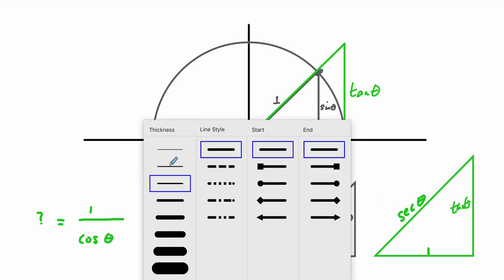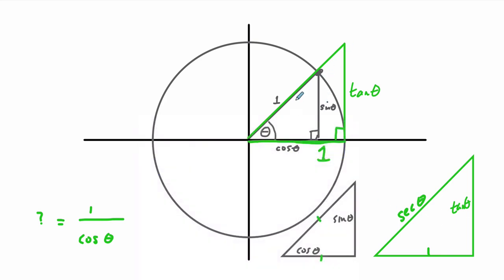Secant of theta. And I'm going to label it here in our model up here. This secant of theta is this hypotenuse right here. And that will change, right, as theta changes. But this is one of our triangles.